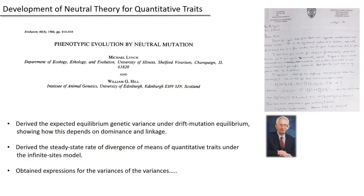My first foray into theory development in the field of quantitative genetics resulted in this paper here done with Bill Hill. You all know about the Hill-Robertson effect. This work was done prior to email days. We were in about a four-week cycle. I would spend about two weeks deriving 20 pages or so of equations sending them to Bill, who would immediately respond with this scrawl that I could barely read.